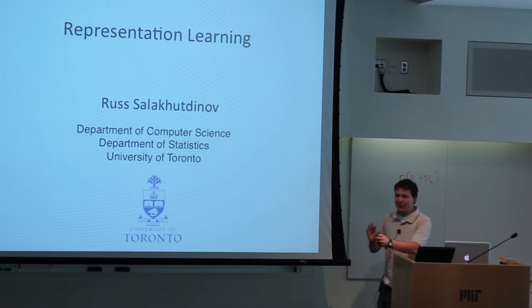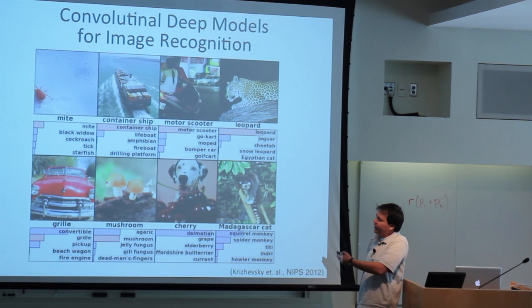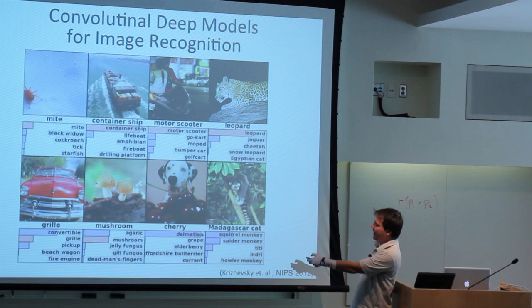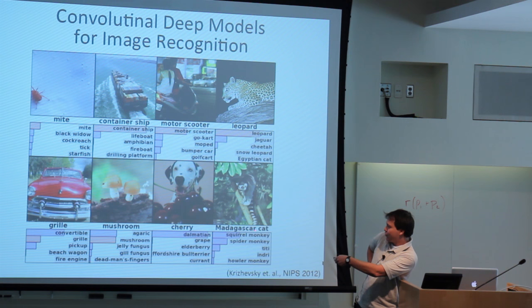First, I wanted to start with convolutional models. This is from AlexNet and you can see the variety of different objects it can recognize — things like a container ship. It makes some mistakes, like recognizing a convertible versus a grill, and this one recognizes a squirrel monkey but the true label is a Madagascar cat.